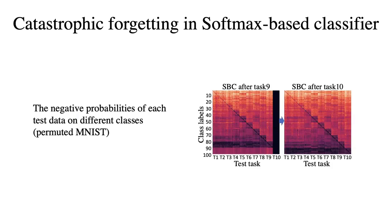Here is an example. The permuted MNIST has 10 tasks, and each task has 10 classes. For data from task 1, the ground-truth class ranges from 0 to 9. The last figure shows the result of the softmax-based classifier after training on task 9. The correct prediction should be along the diagonal.